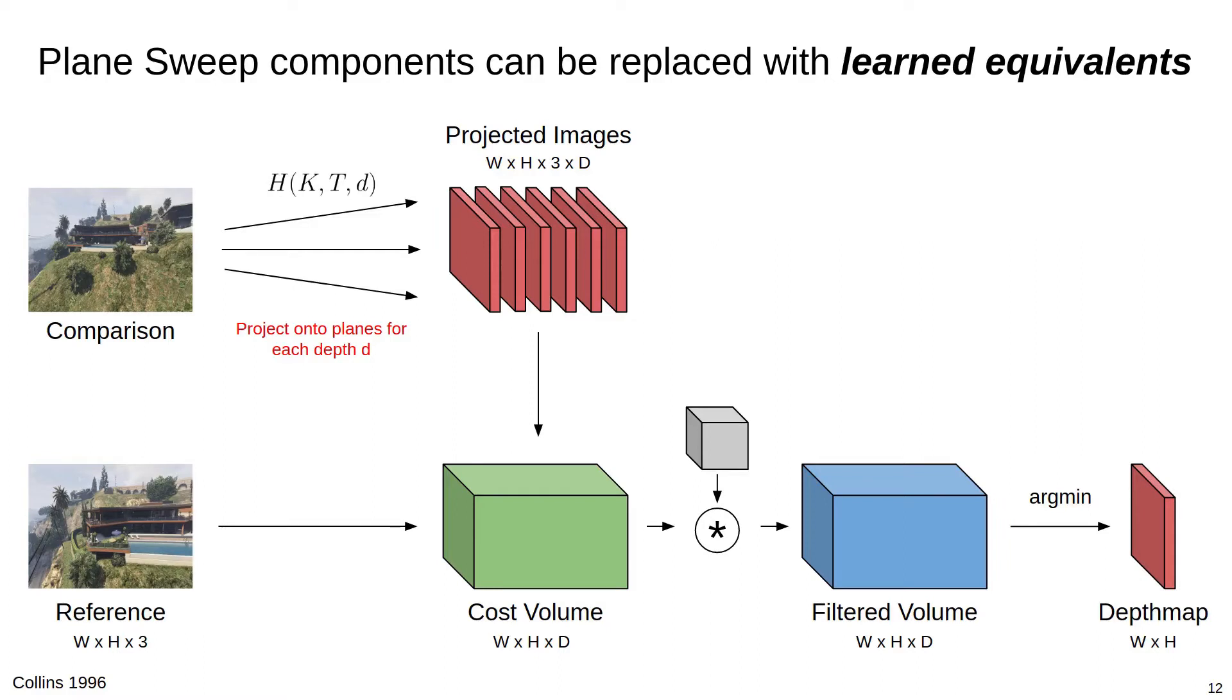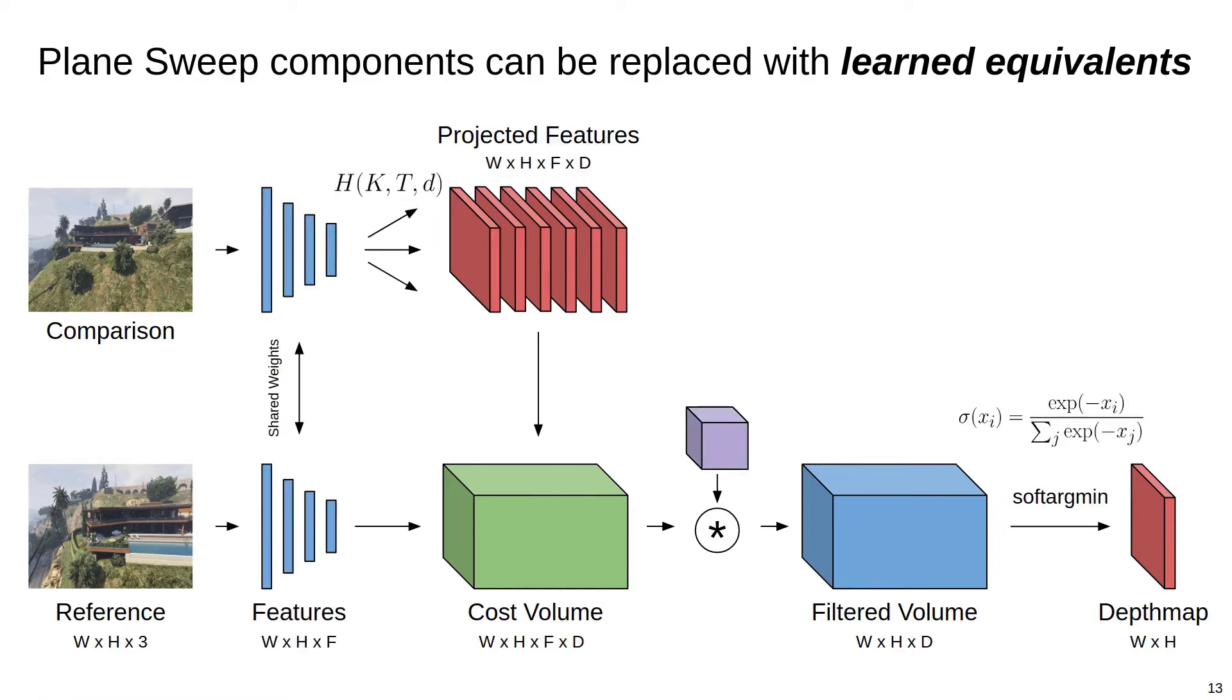Each component of the Plane Sweep pipeline can be replaced with learning-based equivalents. Learned features can be used instead of raw pixel intensities, the cost volume filter weights can be replaced with learned kernels, and the minimization over depth hypotheses in the cost volume can be replaced by a differential soft argmin operation, which allows for the entire pipeline to be trained end-to-end. Replacing these classical components with equivalents learned from data allows for robustness to things like lighting changes, missing or low texture, and other confounding factors found in natural scenes.